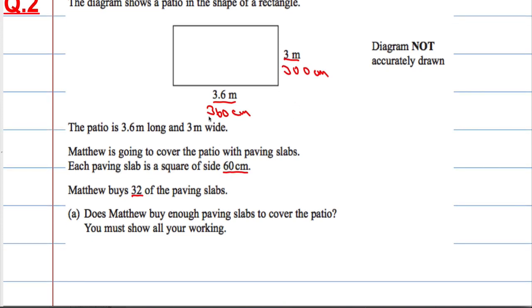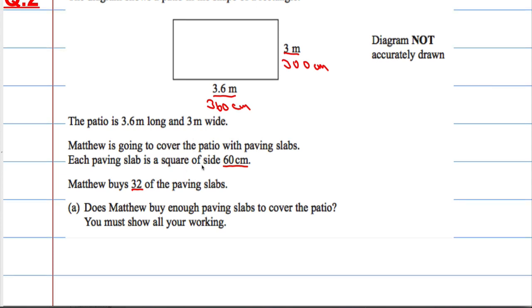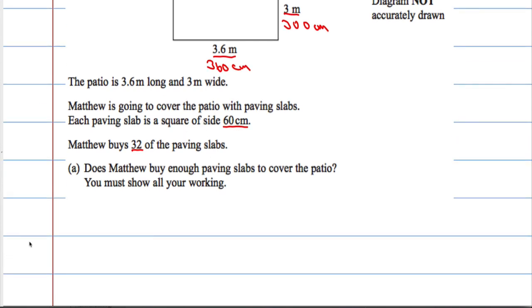The first thing I'm going to work out is the area of the rectangle. If I work out the area of the patio, divide by the area of the slab, then see how many slabs fit in. So let's start with the area of the rectangle. Area of patio equals 360 times 300. 36 times 3 is 108.